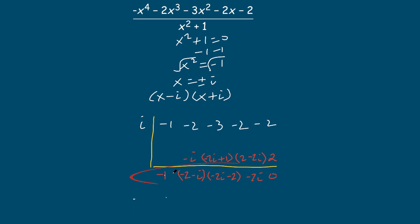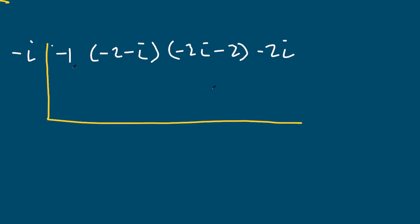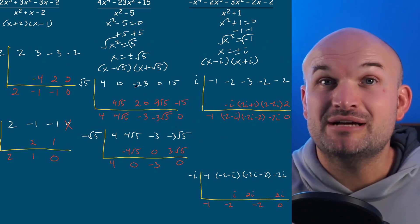In our last example, I'm going to use negative i, with coefficients negative one, negative two minus i, negative two i minus two, and negative two i. Bring down negative one. Negative one times negative i is positive i — I can only add the i's, leaving negative two. Negative two times negative i is positive two i, add that and I'm just left with negative two. Negative two times negative i is positive two i, which again leaves me with zero.